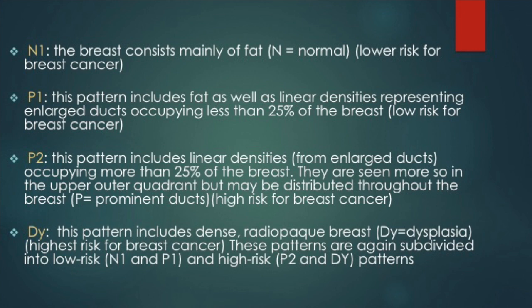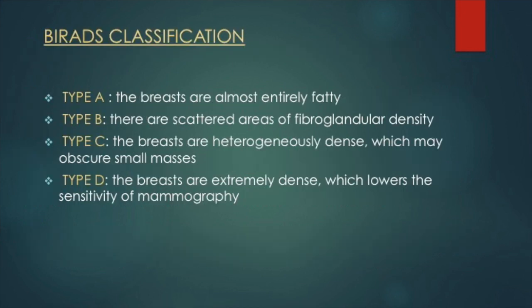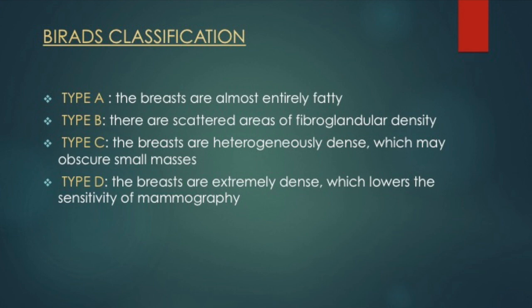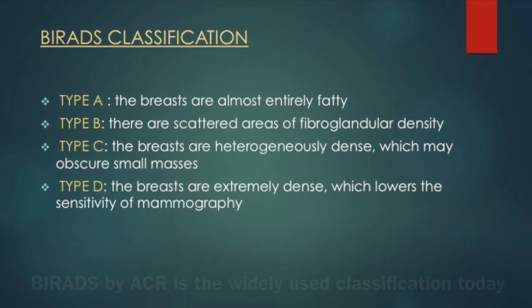P2 linear densities usually appear prominent in the upper outer quadrant but could be distributed throughout the breast. DY included dense radio-opaque breast, which was considered a high risk pattern. Later on, over the years, the BI-RADS system was developed.